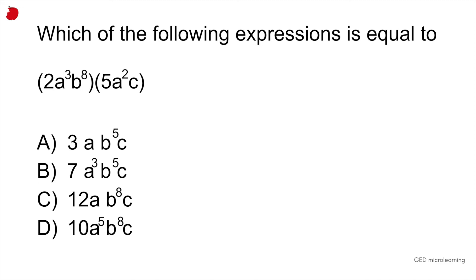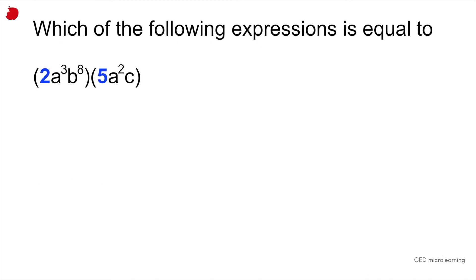So when you're multiplying polynomials like this, the first thing that you have to do is you have to multiply the coefficient. So the coefficients are basically your base number, so to speak. In this example, the coefficients are 2 and 5, so 2 times 5 is 10.